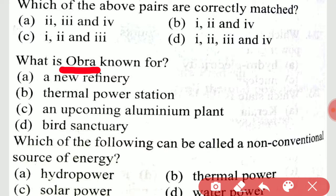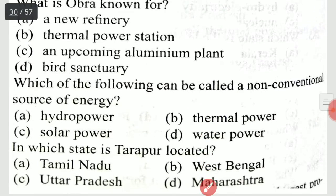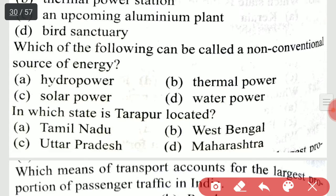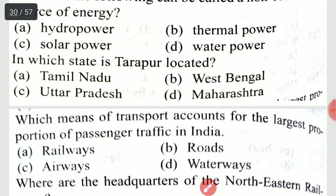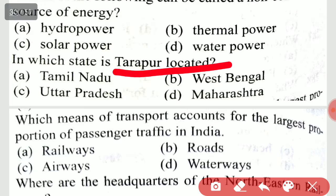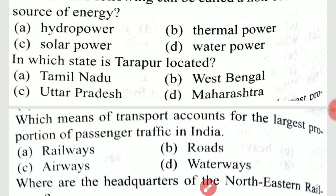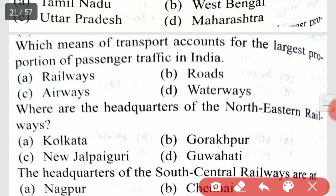Obra is a thermal power station. Which of the following can be called a non-conventional source of energy? It is solar power. In which state is Tarapur located? Tarapur is in Maharashtra.